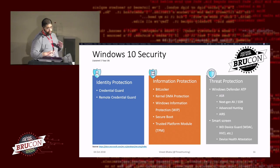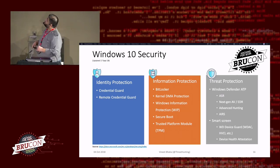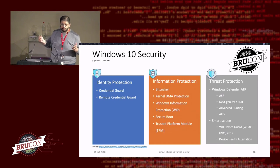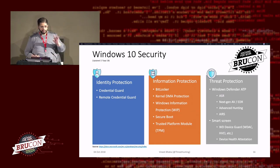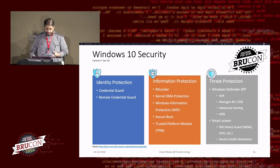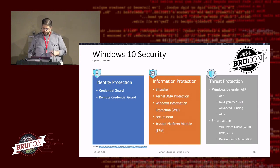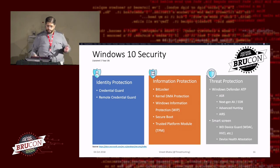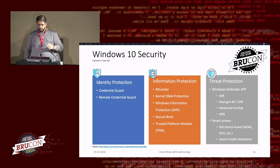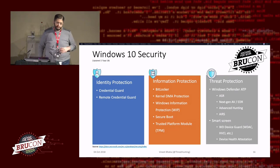Windows 10 security — they change this very regularly. The last update is from the 17th of September. They had about a dozen different blocks and brought it down to three blocks. There's identity protection, which is credential guard and remote credential guard. There's information protection, which is BitLocker, DMA protection, Windows Information Protection, secure boot, and TPM modules. And then there's threat protection, which is WDATP — which now has ASR, the EDR product, hunting, and AIRS. AIRS is the incident response. And then smart screen, which is essentially device guard and kernel protection.